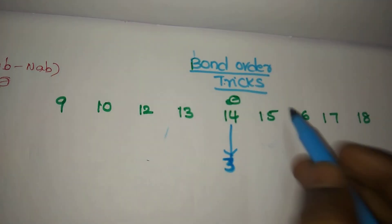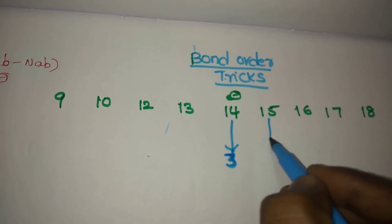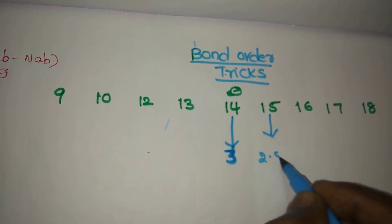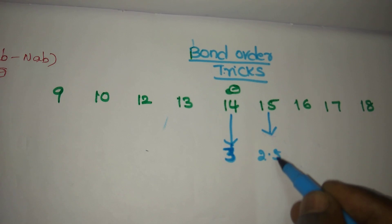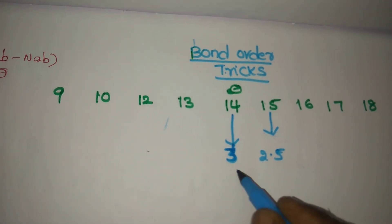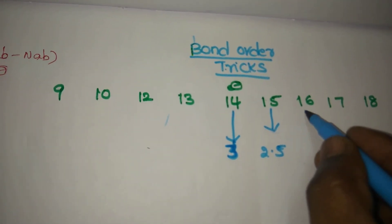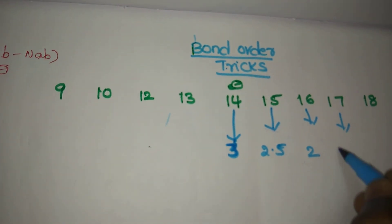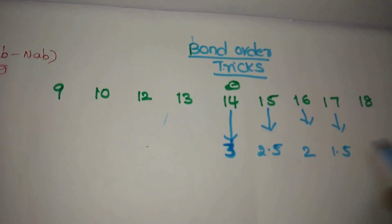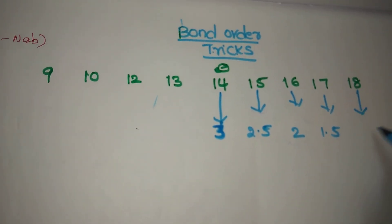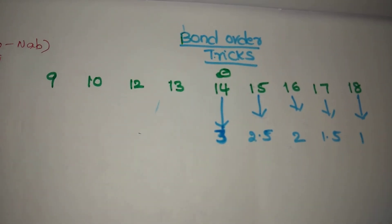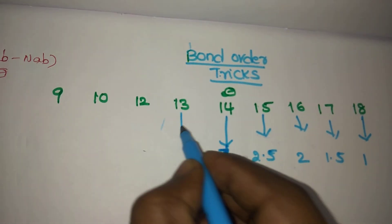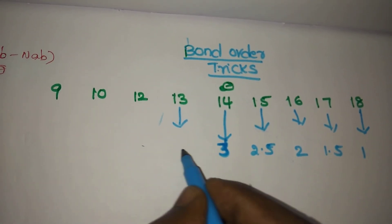From left to right, subtract 0.5 every time. So 14 electrons has bond order 3, 15 electrons has bond order 2.5 — every time subtract 0.5.